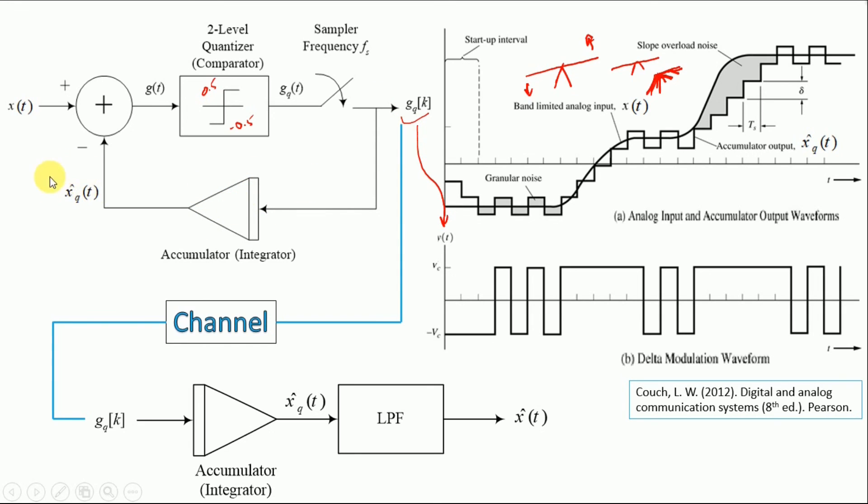And hence if we use the same accumulator, if this is the input and we use an accumulator, so we are going to get this signal and this is appearing over here x hat q of t. So this x hat q of t is represented by means of this accumulator curve.